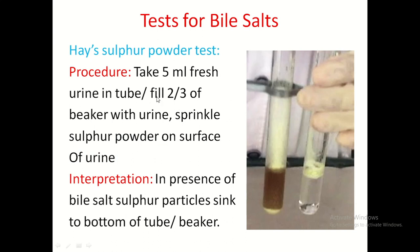Procedure of sulfur powder test: take 5 ml fresh urine in a test tube or fill two-thirds of a beaker with urine, then sprinkle sulfur powder on the surface. Interpretation: in the presence of bile salts, sulfur powder sinks to the bottom. In the control with distilled water, bile salts are absent so the sulfur powder floats at the top.